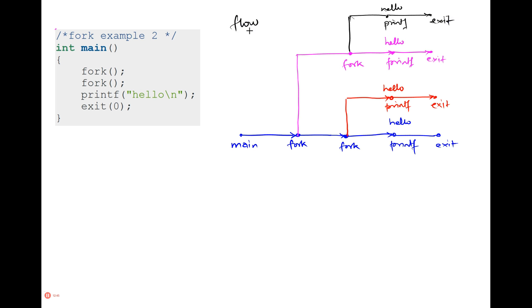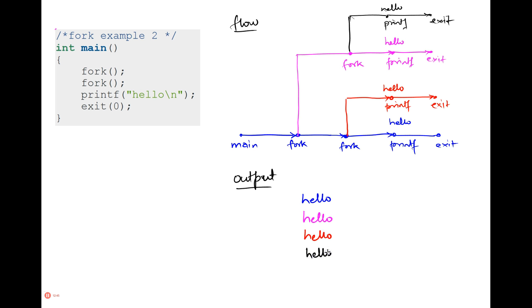The output in this example is a little speculative. We can probably be sure the first hello is from the parent who created all the children. After that, the order depends on how the scheduler works and how the various processes get scheduled. A possible sequence is: hello from the parent, then hello from the first child, then the other children, giving three hellos total.